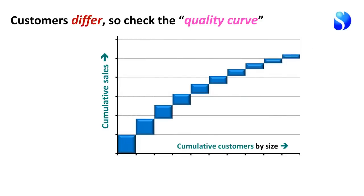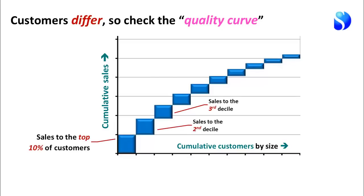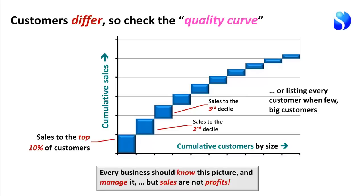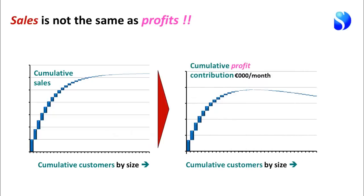Each of these additional frameworks is useful on its own and as part of understanding the whole architecture of a business. Here's one example with the quality or attribute of resources: here is the sales contribution that arises from each size group of customers — what we call the quality curve. Down at the bottom left we have the sales made to the top 10% of customers, the next block is the second decile, and so on. In businesses with small numbers of very large customers, you might lay this out for every single customer.